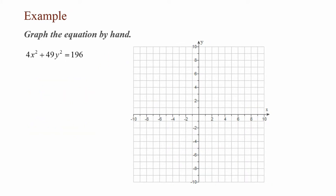In this example, graph the equation by hand: 4x² + 49y² = 196. Because of the plus sign, I know I have an ellipse. However, my equation should equal 1, so my first step is to divide both sides by 196. This gives 4x² / 196 + 49y² / 196 on the left side.